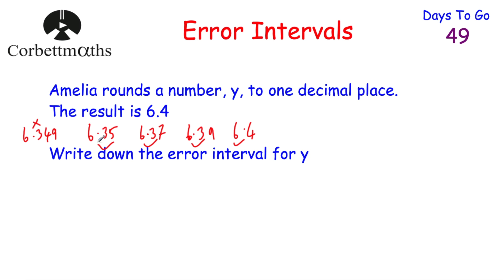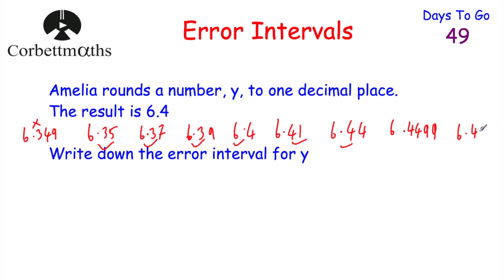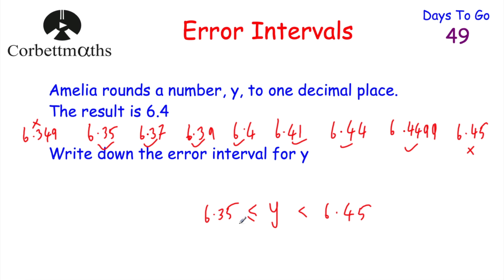So y has to be greater than or equal to 6.35. In terms of numbers above 6.4, it could be 6.41, 6.44, or 6.4499, but it couldn't be 6.45 because that would round up to 6.5. So the error interval for y is: 6.35 ≤ y < 6.45.